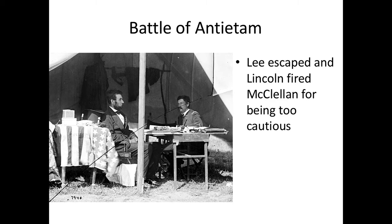McClellan is going to be fired for being too cautious — this is actually the second time he got fired, having also been fired after the Peninsula Campaign for the same reason. The American people in the North liked McClellan so much they pressured Lincoln to rehire him, and then here again McClellan fails because he's too cautious. Even though McClellan pretty much wins the battle, he loses the war here by allowing Lee to escape and reassemble what's left of his army.